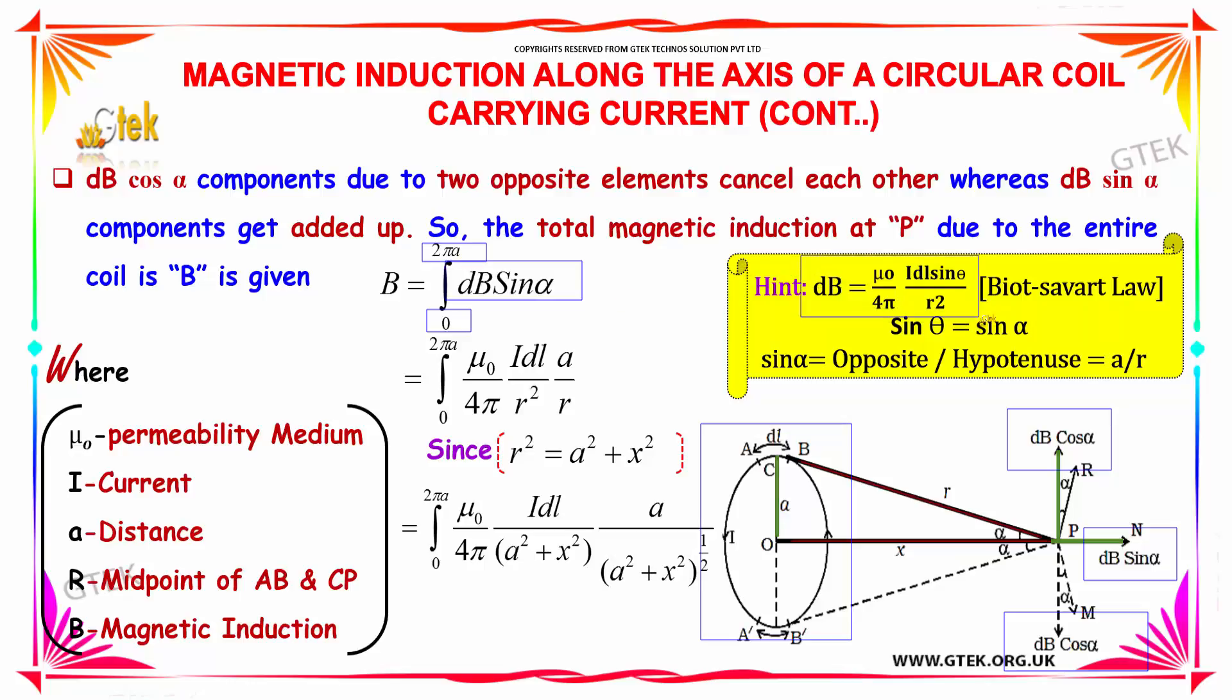As you know from the Biot-Savart law, dB is equal to mu0 into i into dl by R square. Since angle is 90 degrees, sin theta is 1, into A by R which is the sin alpha.